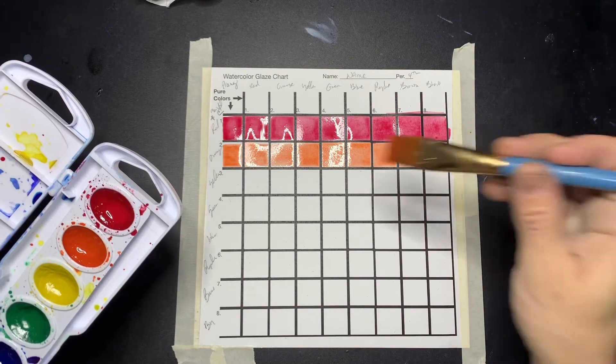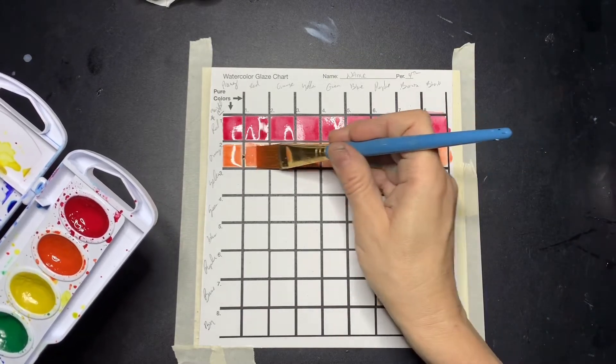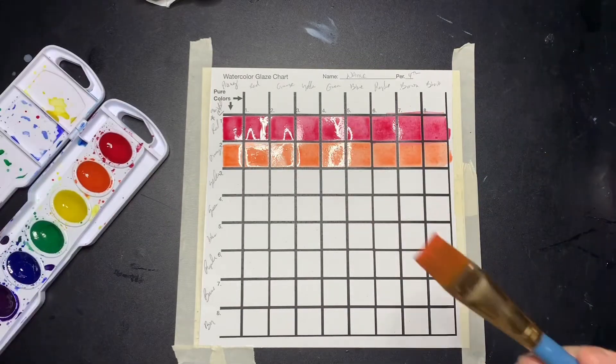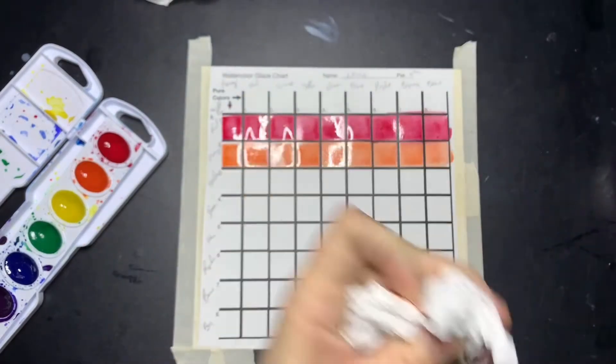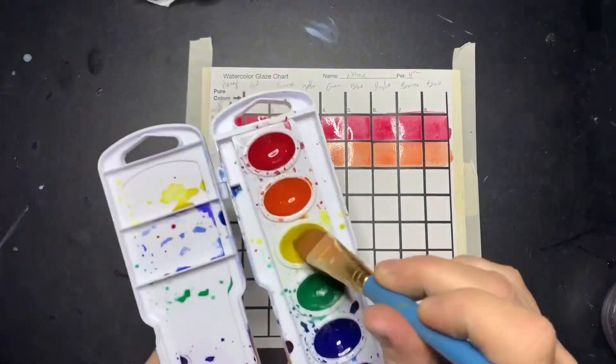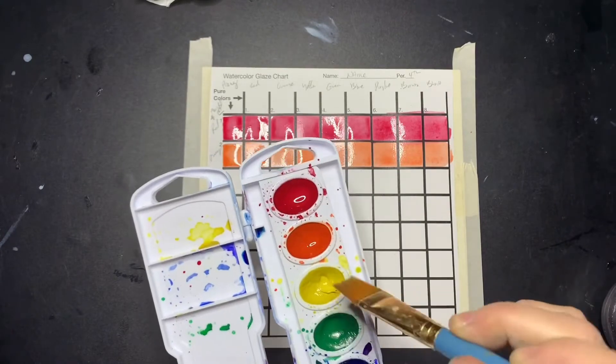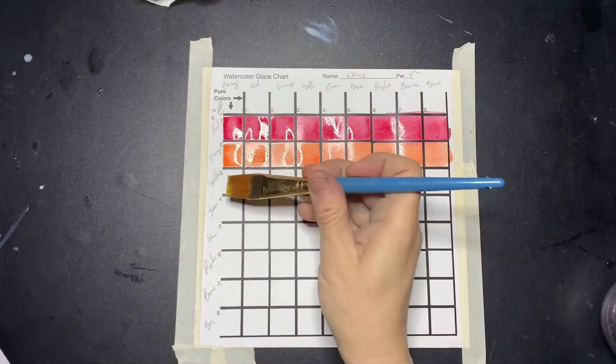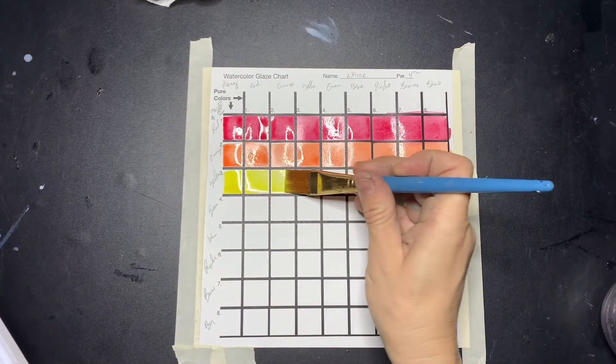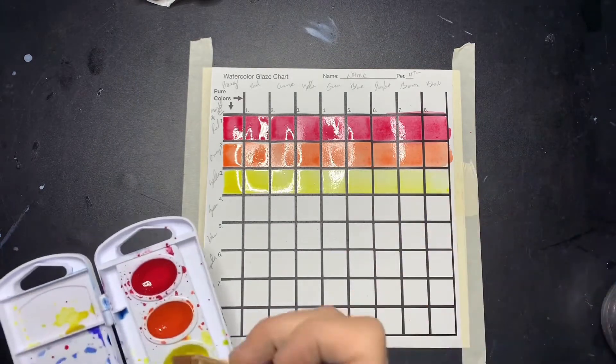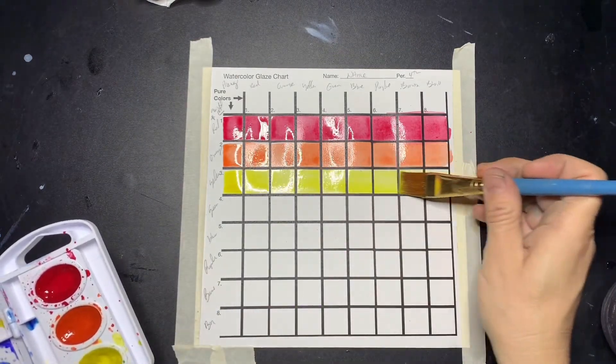Then wash out your brush and go to the third color. It helps to wipe off your brush first before washing it, so you don't have to change your water as often. Make sure you do change your water when it's dirty so it doesn't mess up the colors of your paints. You'll just work your way down.